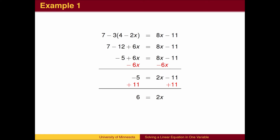We now eliminate the constant from the side that contains the variable. In this case, we eliminate the negative 11 by adding 11 to both sides. Finally, we divide both sides by 2.